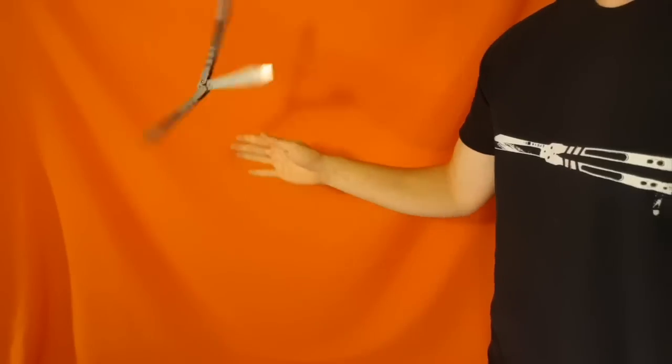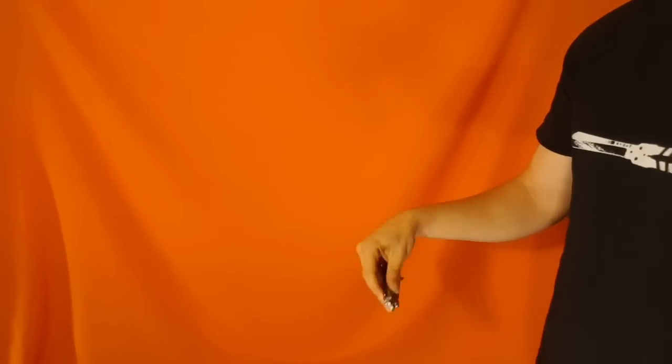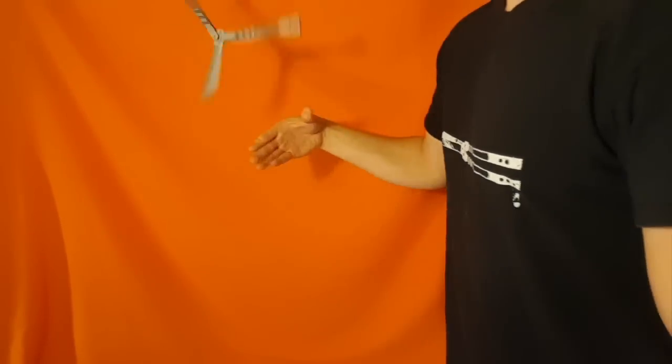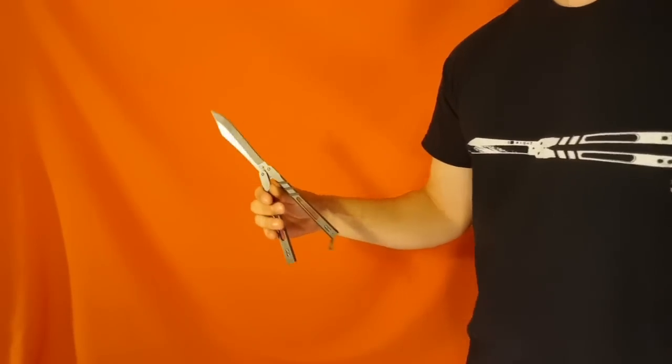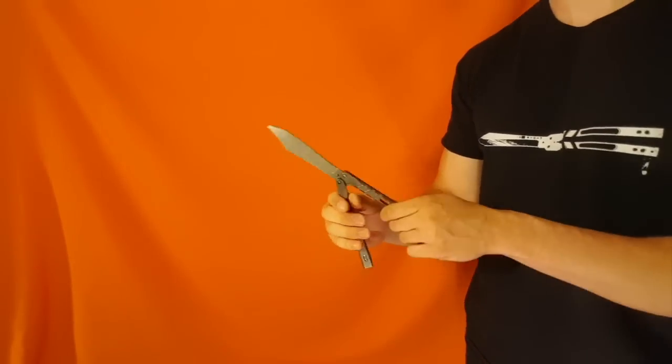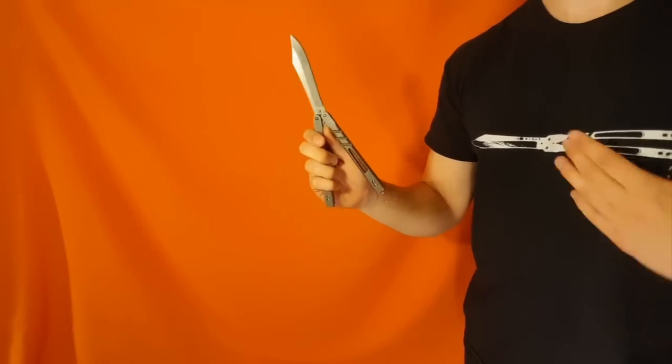So you can do the back forward back forward throw into nothing, you can do the back forward back forward catch with the bite handle, and then now you can do the back forward back forward catch on the safe handle. So again nothing crazy, you're just doing a catch on the safe handle. That's all there is to it.